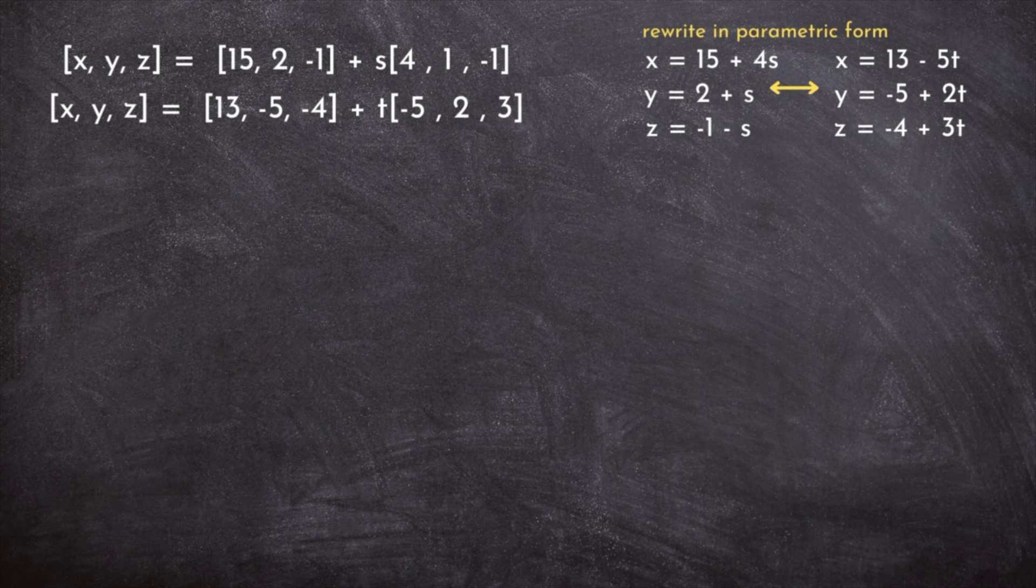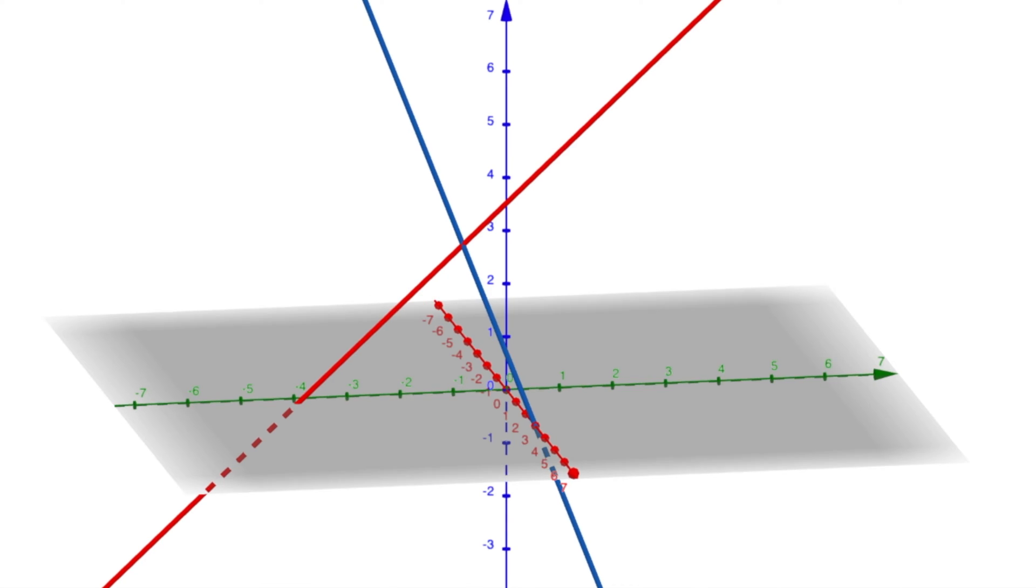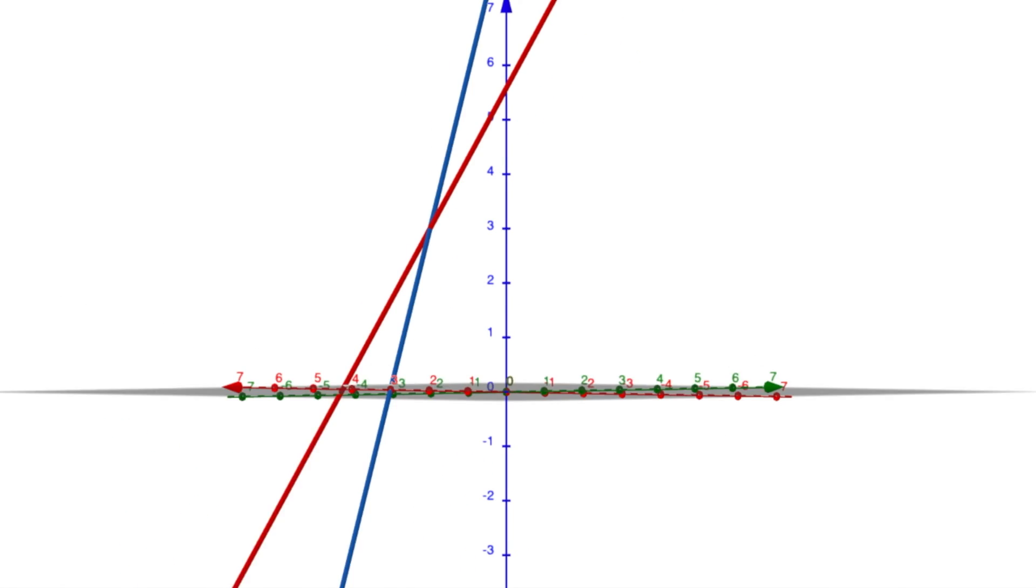Parametric equations are great because we can set them equal to each other. When we do that, we're looking for the values of s and t that make x, y, and z equal. When x, y, z are equal, we have a point of intersection.